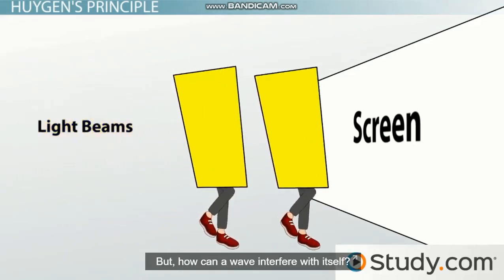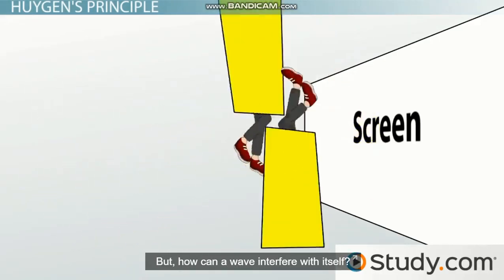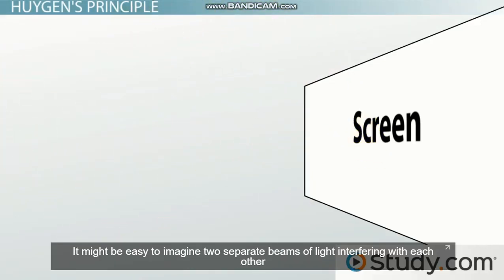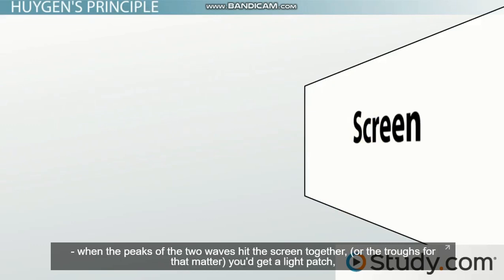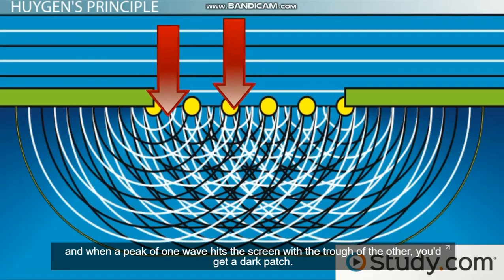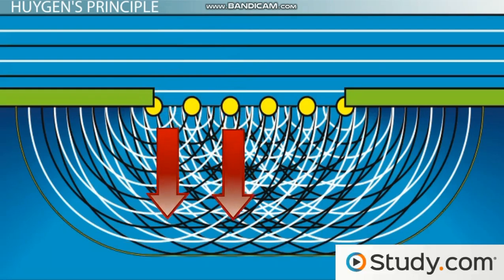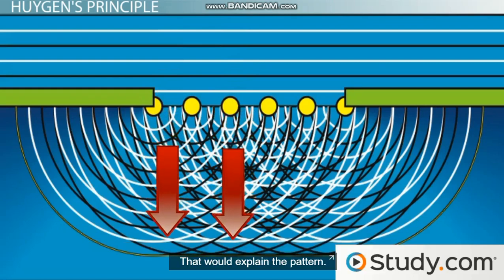But how can a wave interfere with itself? It might be fairly easy to imagine two separate beams of light interfering with each other. When the peaks of the two waves hit the screen together — or the troughs for that matter — you'd get a light patch. And when the peak of one wave hits the screen with a trough of another, you'd get a dark patch. That would explain the pattern.